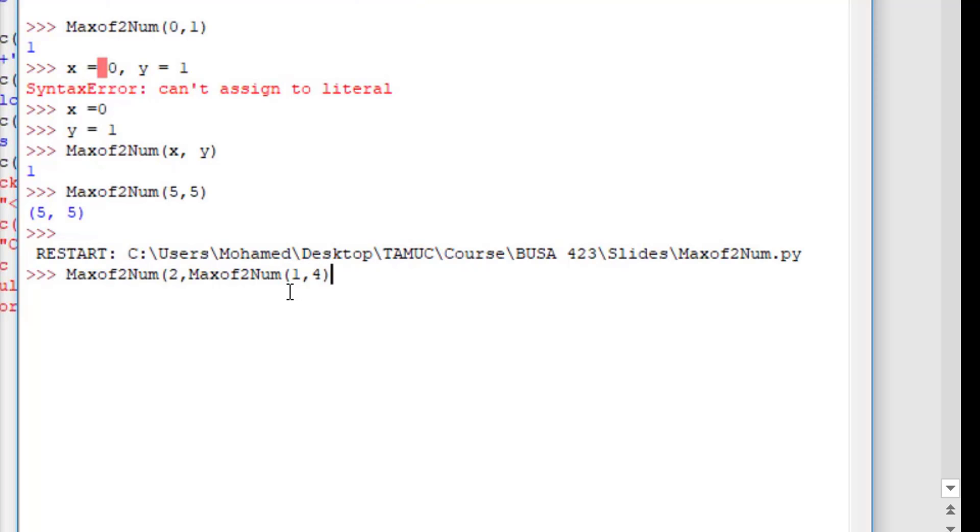So here I called one and four. Basically, for each of these values you can call another function that you have. So here, max of one and four is four, so max of two and four is four. You can see it gives us four.